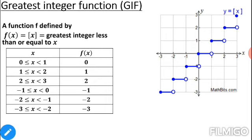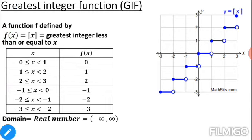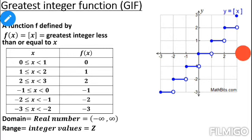The GIF function is very important for Class 11th and 12th — learn it thoroughly. The domain is all real numbers because it is defined everywhere. The range is the set of all integers, because whatever decimal or fraction value you put inside, the output is always an integer value.